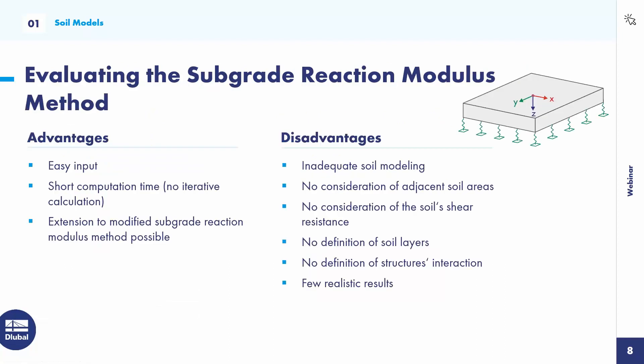To evaluate the subgrade reaction modulus method: advantages are the easy input, the short computation time because there is no iterative calculation, and it's possible to extend it to the modified subgrade reaction modulus method. Disadvantages are inadequate soil modeling — it's not possible to consider adjacent soil areas or soil shear resistance, not possible to define soil layers or structure interaction, and there are few realistic results. My opinion is the subgrade reaction modulus method no longer meets today's requirements and is contrary to increasingly precise structural analysis.